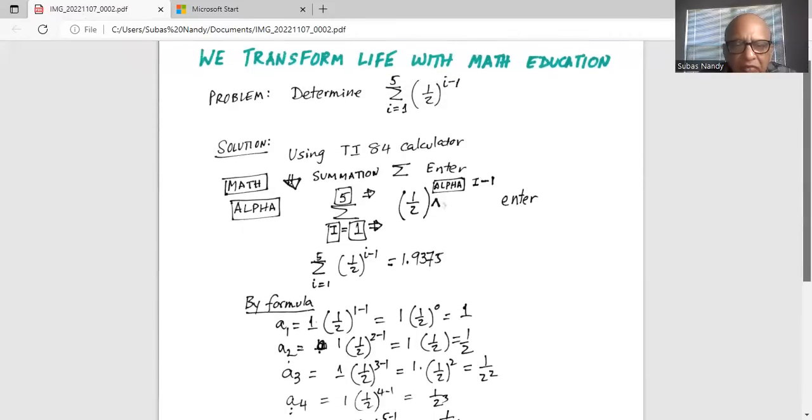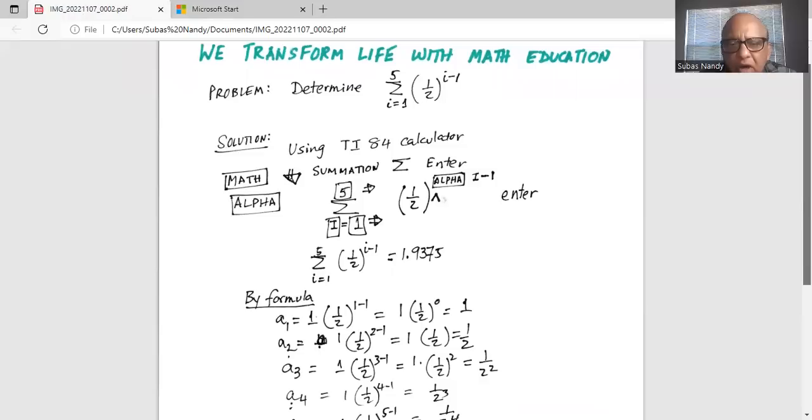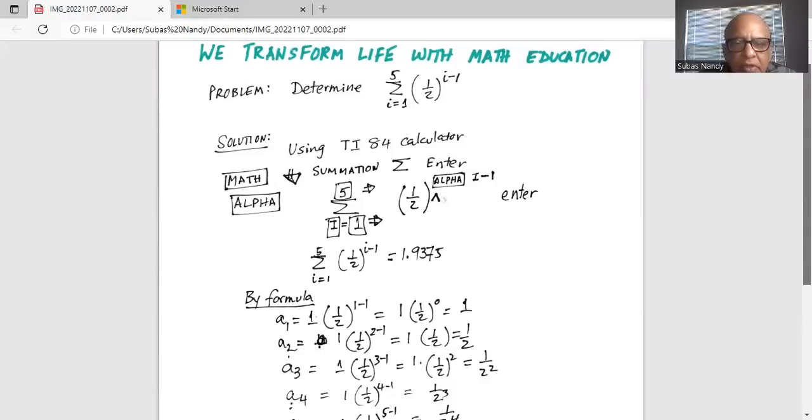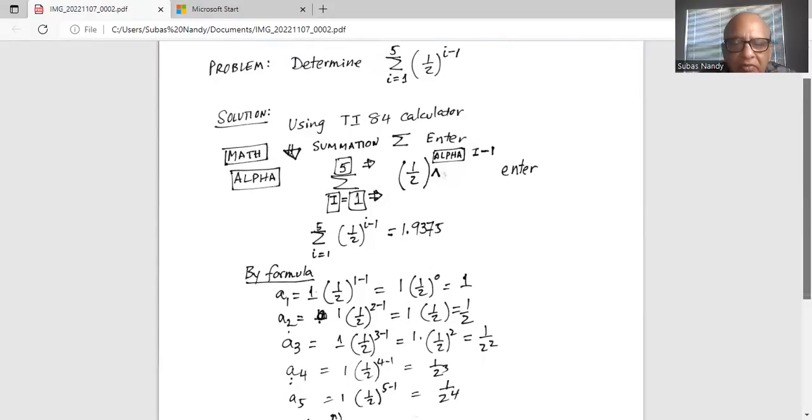A1 is equal to 1 times half raised to the power of 1 minus 1, which is 1 multiplied by half to the power of 0, which is 1. The A2 is equal to 1 multiplied by half, and so forth.